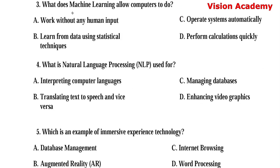Question number 3. What does machine learning allow computers to do? Option A: Work without any human input. Option B: Learn from data using statistical techniques. Option C: Operate systems automatically. Option D: Perform calculations quickly. Here, option B, learn from data using statistical techniques, is the right answer.